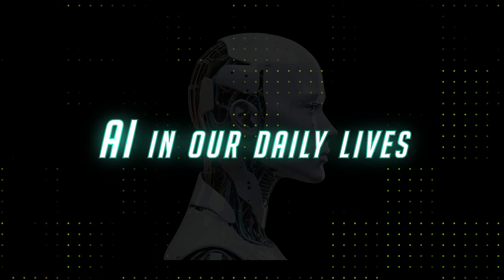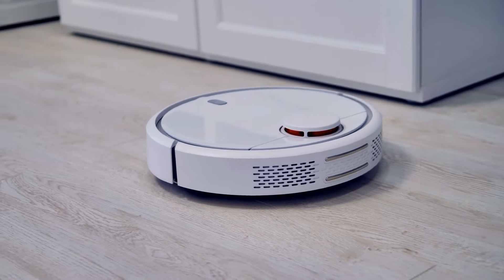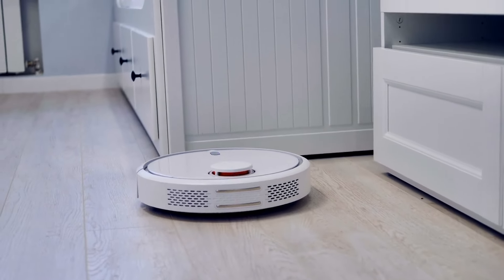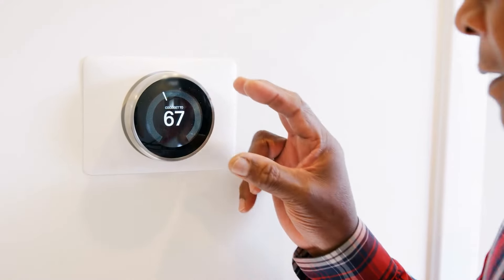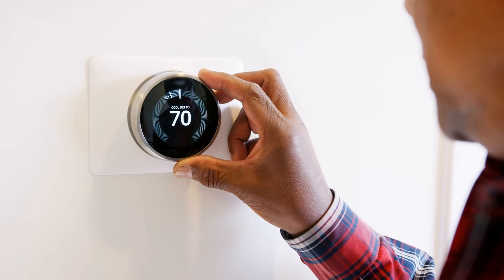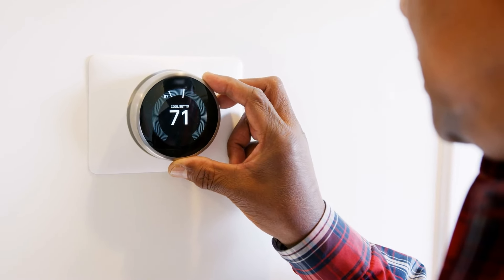Number four, AI in Our Daily Lives. AI will become more prevalent in our daily lives, assisting with tasks like cleaning, cooking, and other household chores. Smart appliances and virtual assistants will be more common, helping us to automate tasks and make our lives more efficient.